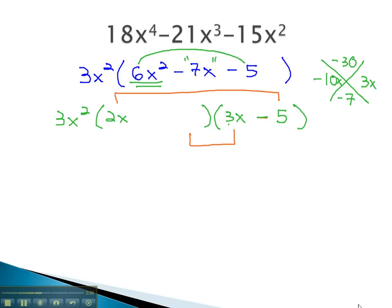When we factor the 3x out of the 3x, we get positive 1. And this gives us our factors.